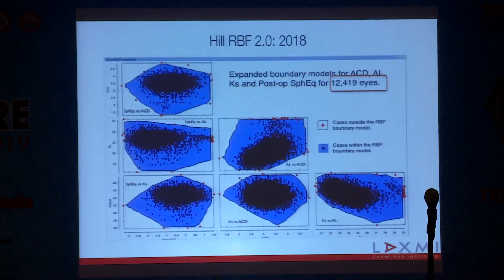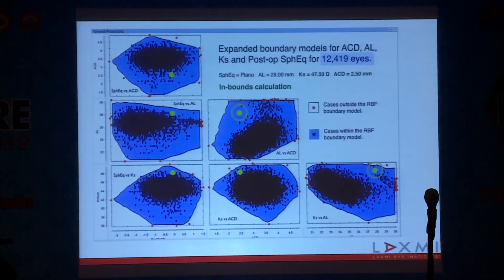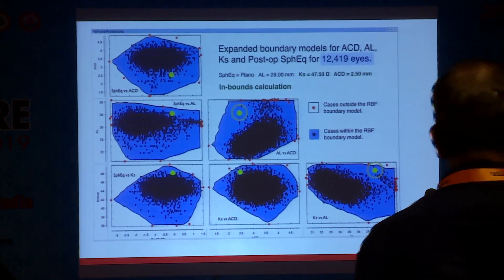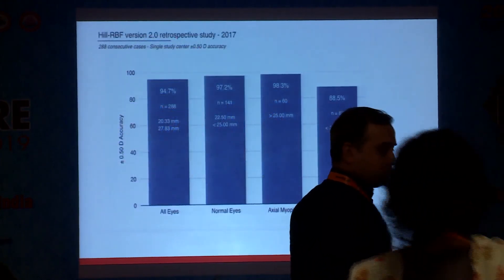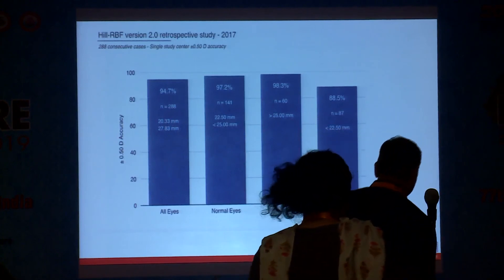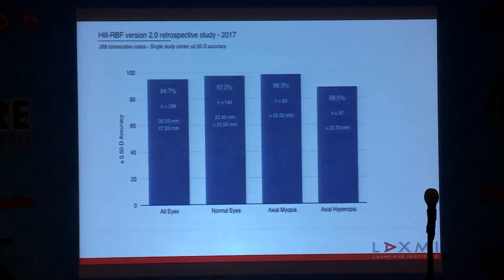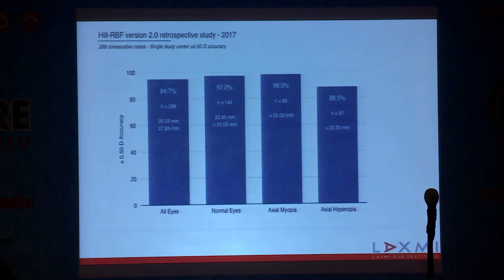Hill developed RBF 2.0 in 2018, incorporating 12,419 eyes, including extremes of anterior chamber depth, axial length, and keratometry. Now the same extreme values — keratometry of 47.50 and anterior chamber depth of 2.50 — fall within the boundary and are flagged as inbound calculations. The performance of the Hill-RBF formula shows a success rate of 94.7% across all axial lengths for getting within ±0.5 diopters post-op refraction — 97.2% in normal eyes, 98.3% in axial myopia, and 88.5% in axial hyperopia, the most difficult segment. It still outperforms all other formulas.